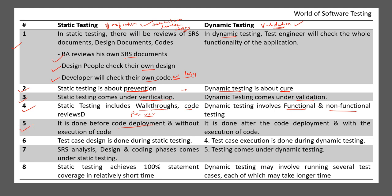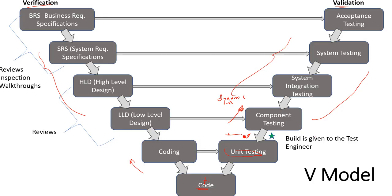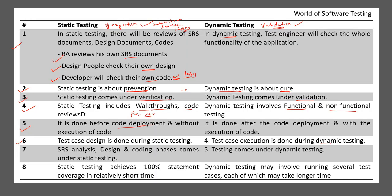The sixth difference: test case design is done during static testing and test case execution is done during dynamic testing. Parallel to the coding activity, the test engineer performs the test case design activity - identifying all test scenarios and designing test cases based on those scenarios. So in static testing there is test case design, and in dynamic testing there is test case execution.